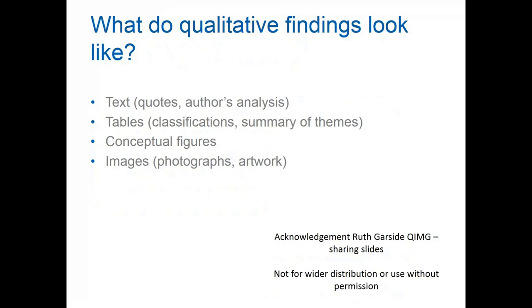What do qualitative findings look like? Lots of qualitative findings are presented as text — that could be quotes, the author's analysis, or tables with classifications and summaries of themes. You could have a conceptual figure or diagram as a finding. You could also have images, photographs, or artwork. So there's a whole range of material that would count as findings that you might be able to synthesise.